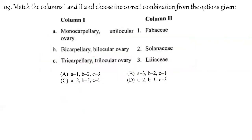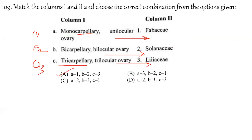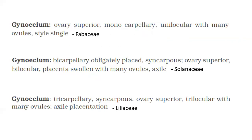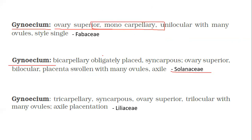Question 109: Monocarpellary gynoecium is found in the first family studied — Fabaceae. If it is 2 (bicarpellary), it is Solanaceae. If the gynoecium is tricarpellary (3), it is Liliaceae. So A=1, B=2, C=3. Option A is correct. In Fabaceae, the ovary is superior with a monocarpellary ovary; in Solanaceae it is bicarpellary; in Liliaceae it is tricarpellary.